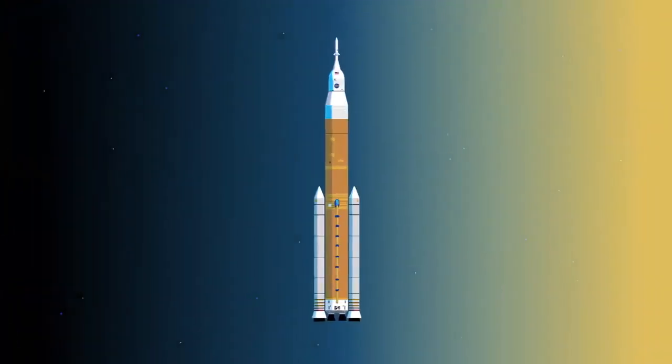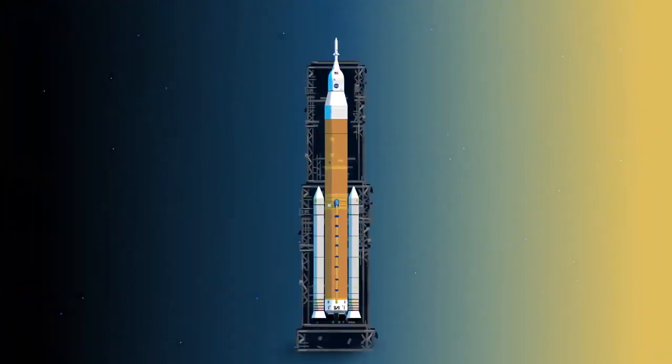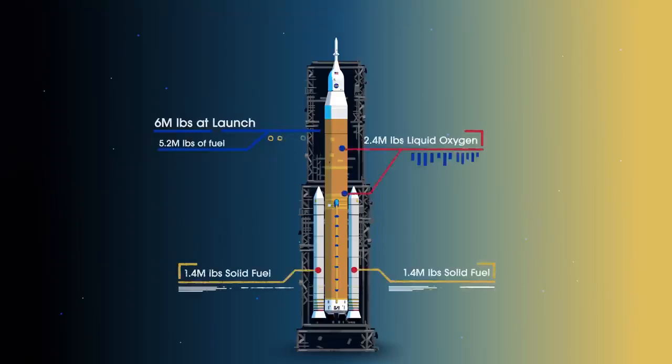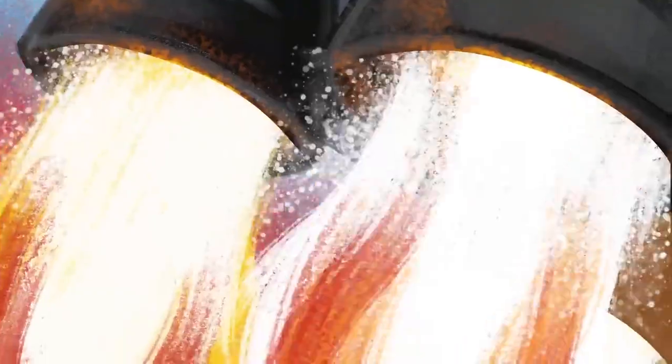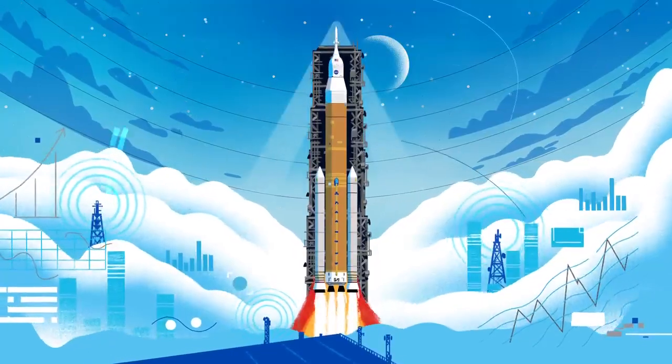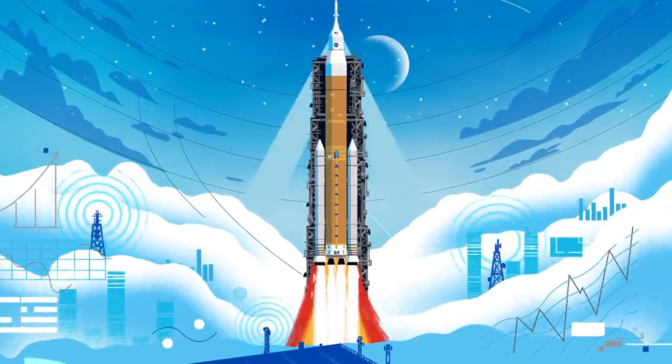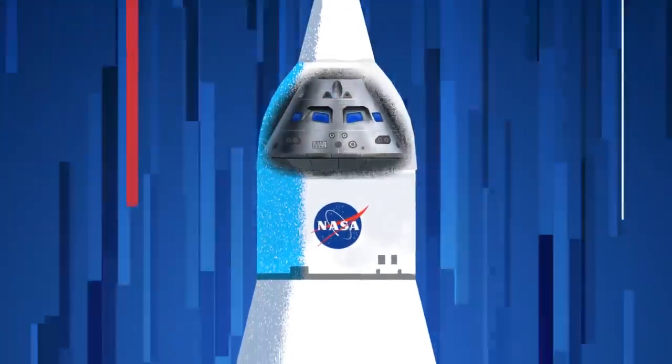Sitting on the launch pad, the entire rocket, fully fueled, weighs just over 6 million pounds, 5.2 million of which is just the fuel. Once ignited, there was no stopping what comes next. All four RS-25 engines and the two solid rocket boosters come to life thundering our crew upwards.